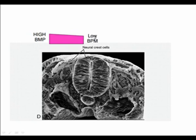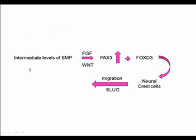Low levels of BMP allow neural tube formation; at higher BMP levels the ectoderm develops into skin instead. At intermediate BMP levels — under the influence of FGF and WNT — cells are induced to become neural crest cells coming off the ectoderm. This intermediate BMP level causes an increase in PAX3, and together with FOXD3, this drives cells in the region between the neural tube and ectoderm to become neural crest cells. These neural crest cells then migrate, partly driven by expression of the gene Slug.